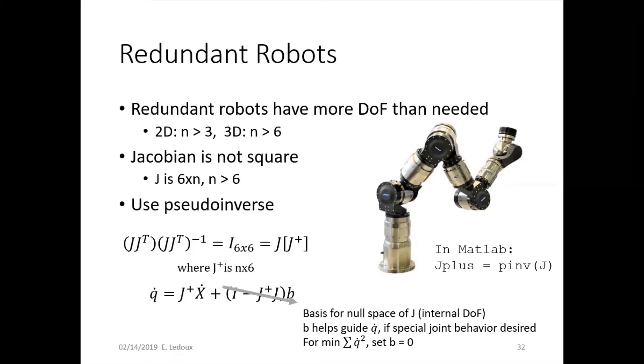If you just want to minimize joint speeds, which is pretty typical, then you can set B equal to zero. Otherwise, you can change B and get different behaviors out of the system.